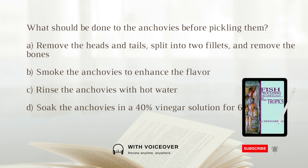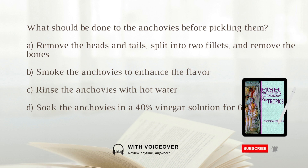What should be done to the anchovies before pickling them? A. Remove the head and tail, split into two fillets, and remove the bones. B. Smoke the anchovies to enhance the flavor. C. Rinse the anchovies with hot water. D. Soak the anchovies in a 40% vinegar solution for 6 hours. Answer: A. Remove the heads and tails, split into two fillets, and remove the bones.